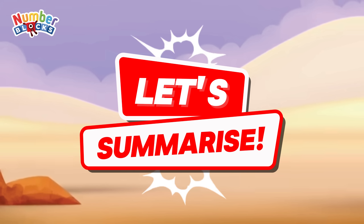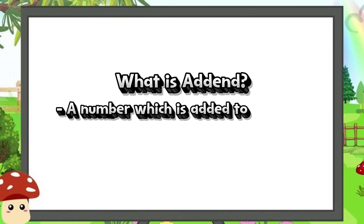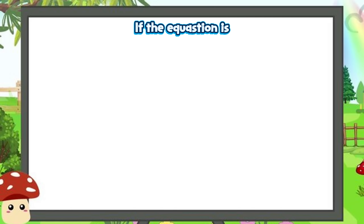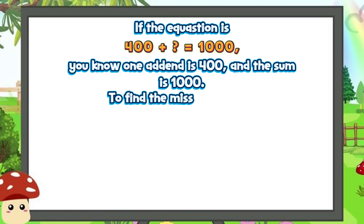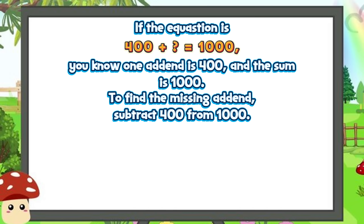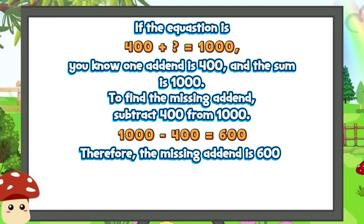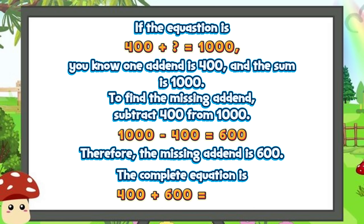Now join me and let's summarize. What is an addend? A number which is added to another. If the question is 400 plus x is equals to 1,000, you know one addend is 400 and the sum is 1,000. To find the missing addend, subtract 400 from 1,000. 1,000 minus 400 is equals to 600. Therefore, the missing addend is 600. The complete equation is 400 plus 600 is equals to 1,000.